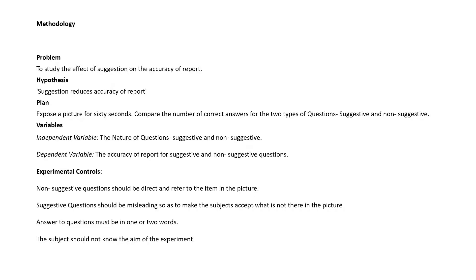Then comes variables — independent variable and dependent variable. The independent variable for this experiment is the nature of questions: suggestive or non-suggestive. The experimenter decides what kind of question is given to the client, and controls the sequence, so therefore it is the independent variable. The dependent variable is the accuracy of report for suggestive and non-suggestive questions — specifically, the number of correct answers given under both categories.